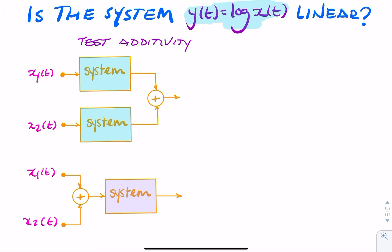So let's test additivity. That's really easy. We just pass x1 and x2 through the system and then add the results. If we pass first x1, we should get log x1. If we pass x2, we'll get log x2.